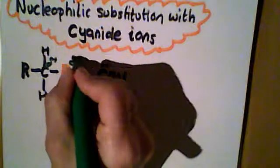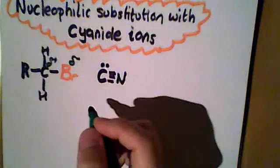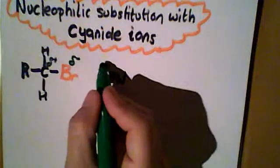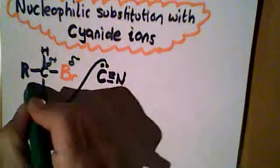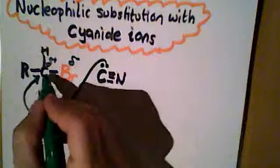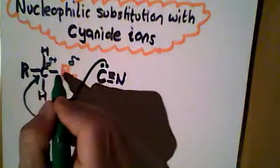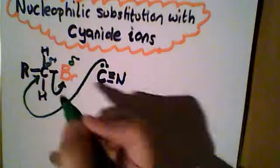As you've seen in other mechanisms, as the lone pair of electrons moves in on the electron deficient carbon, this pair of electrons will repel the pair of electrons in the covalent bond sufficiently until eventually the bromine atom will take them with it.